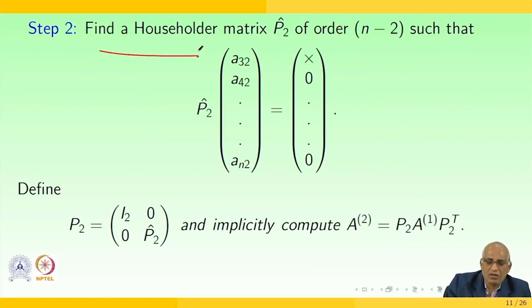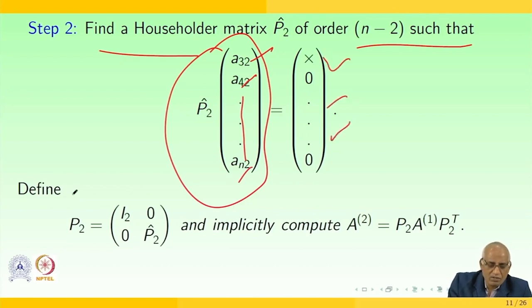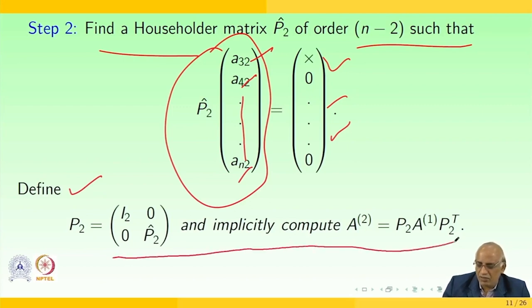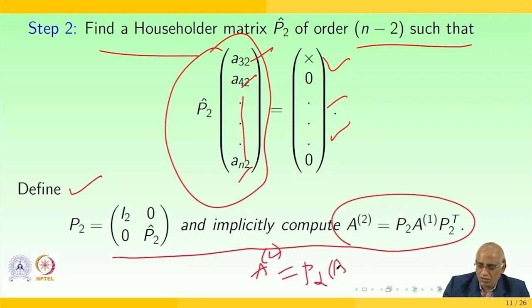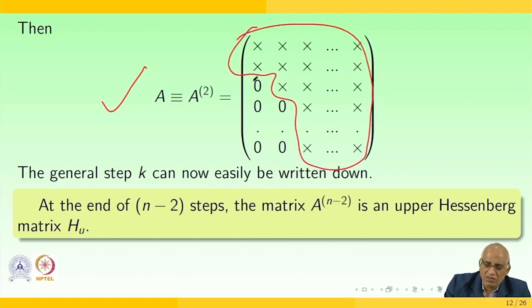In step 2, find a Householder matrix P̂₂ of order N-2 such that P̂₂·[A_{32}, A_{42}, ..., A_{N2}]ᵀ = [x, 0, ..., 0]ᵀ. Define P₂ as a block matrix with I₂ in the upper-left and P̂₂ in the lower-right, then implicitly compute A₂ = P₂·A₁·P₂ᵀ. The resulting matrix A₂ has all the required non-zero values and zeros below the second subdiagonal.